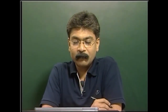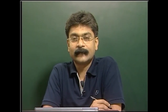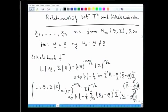In the last lecture, we were establishing the relationship between Hotelling's T² statistic and the likelihood ratio statistic. We had considered that x₁, x₂, ..., xₙ is a random sample from a multivariate normal distribution with mean vector μ and a covariance matrix positive definite Σ. We were looking at the null hypothesis to be tested: μ equal to a null vector against the alternate hypothesis that μ is not equal to a null vector.